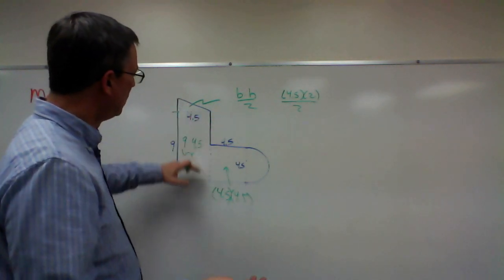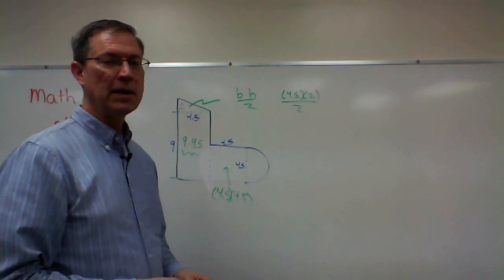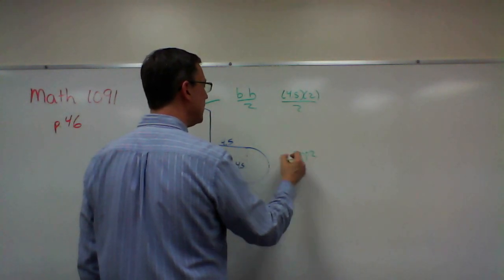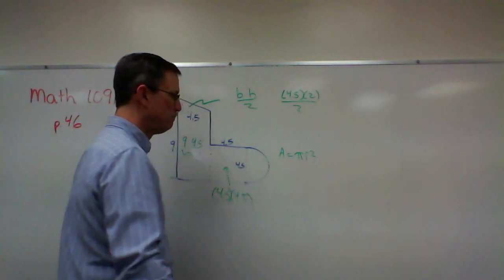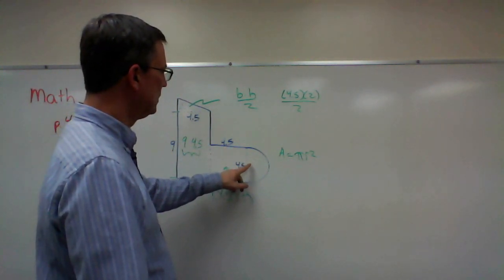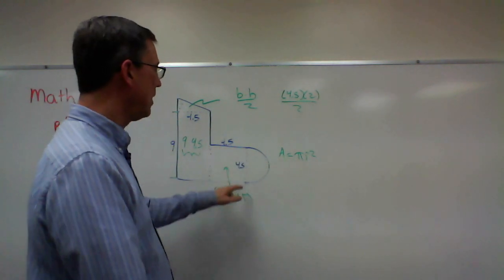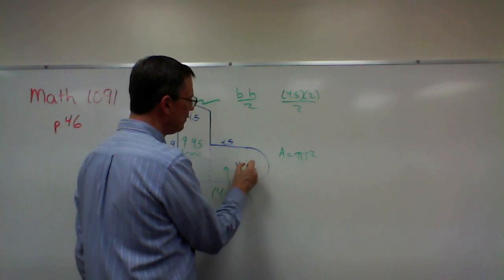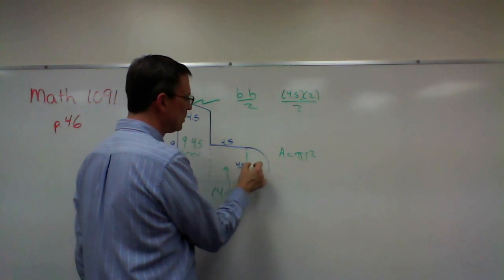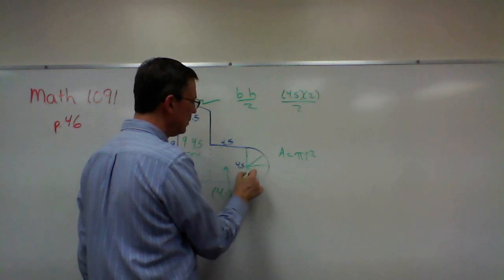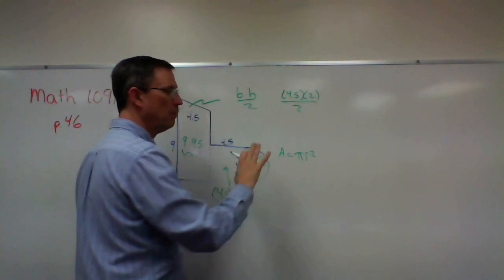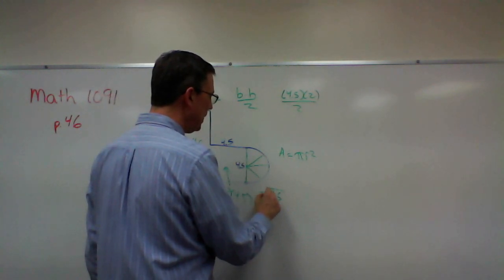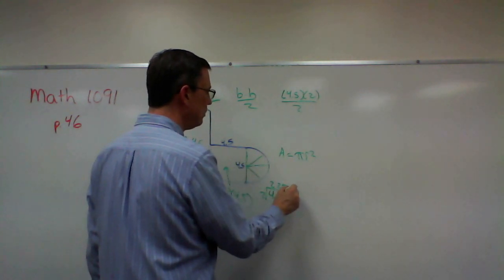So far we have the triangle, rectangle, square, and now let's talk about this half circle. We know that the area of a circle is pi times the radius squared. One thing is it doesn't tell us the radius — we have a diameter. But if this whole thing is 4.5, then if I cut it in half, from here to here is a radius. These two radii together make up a diameter. So if we take 4.5 and divide by 2, we get 2.25 — that is the radius.